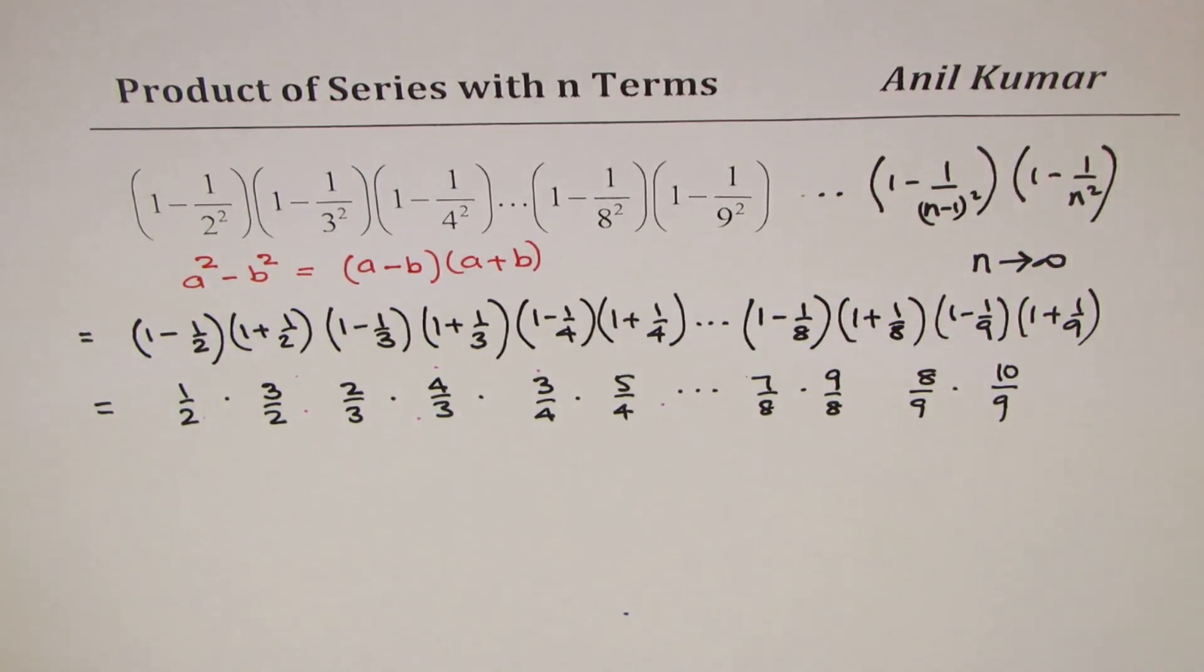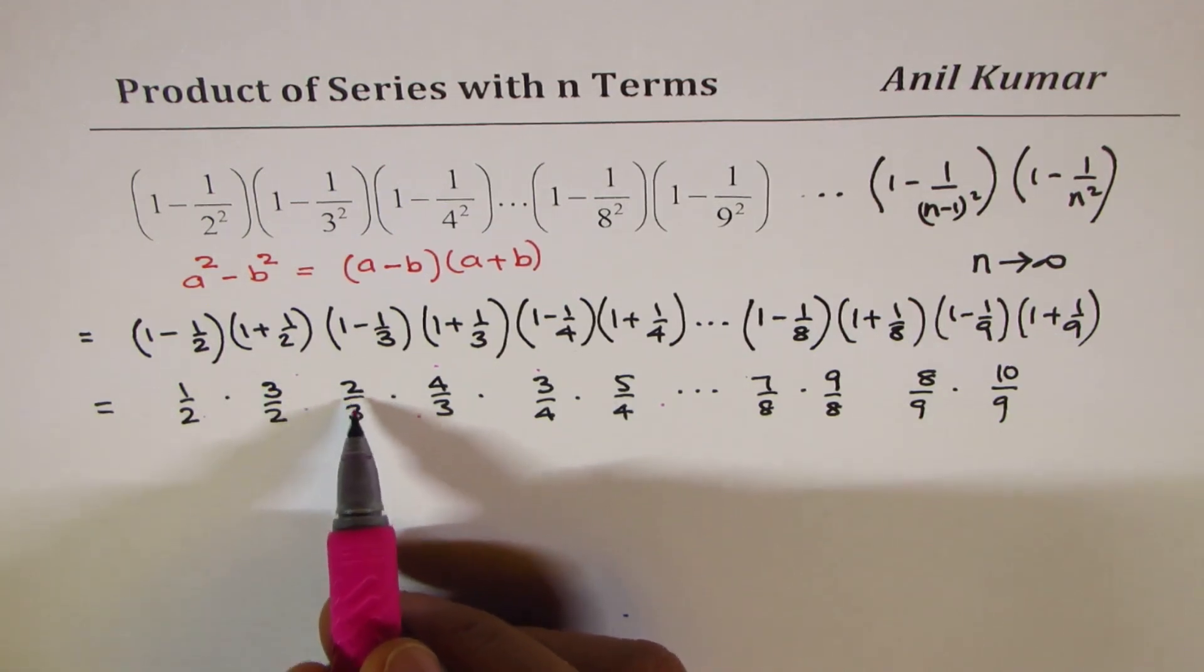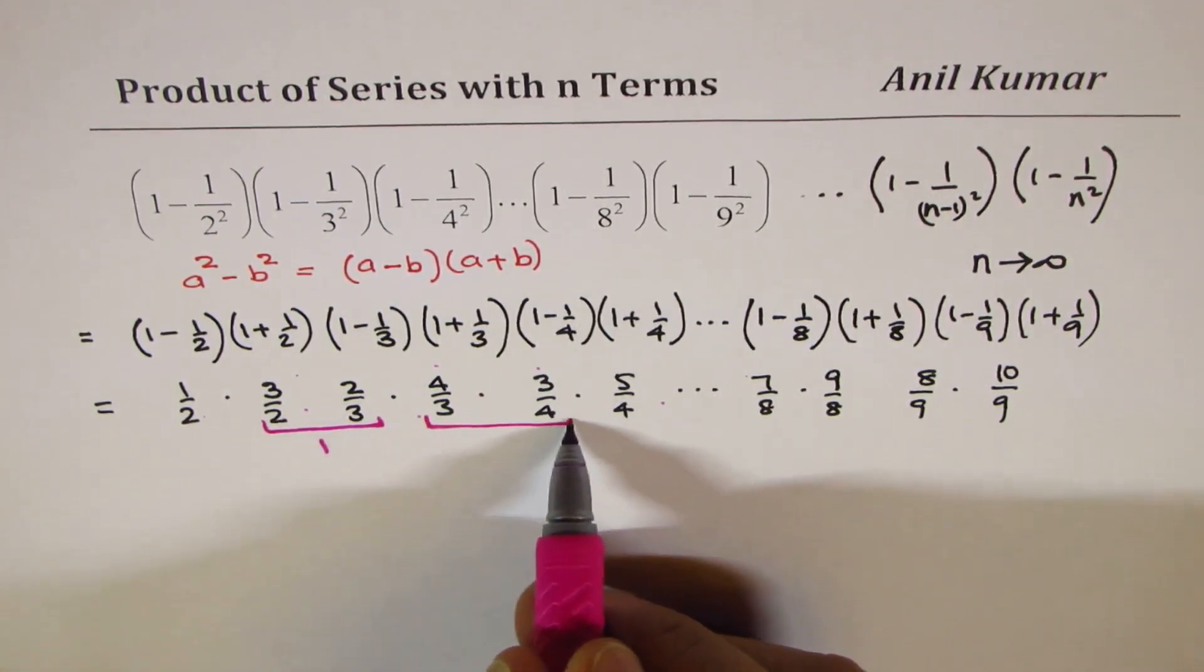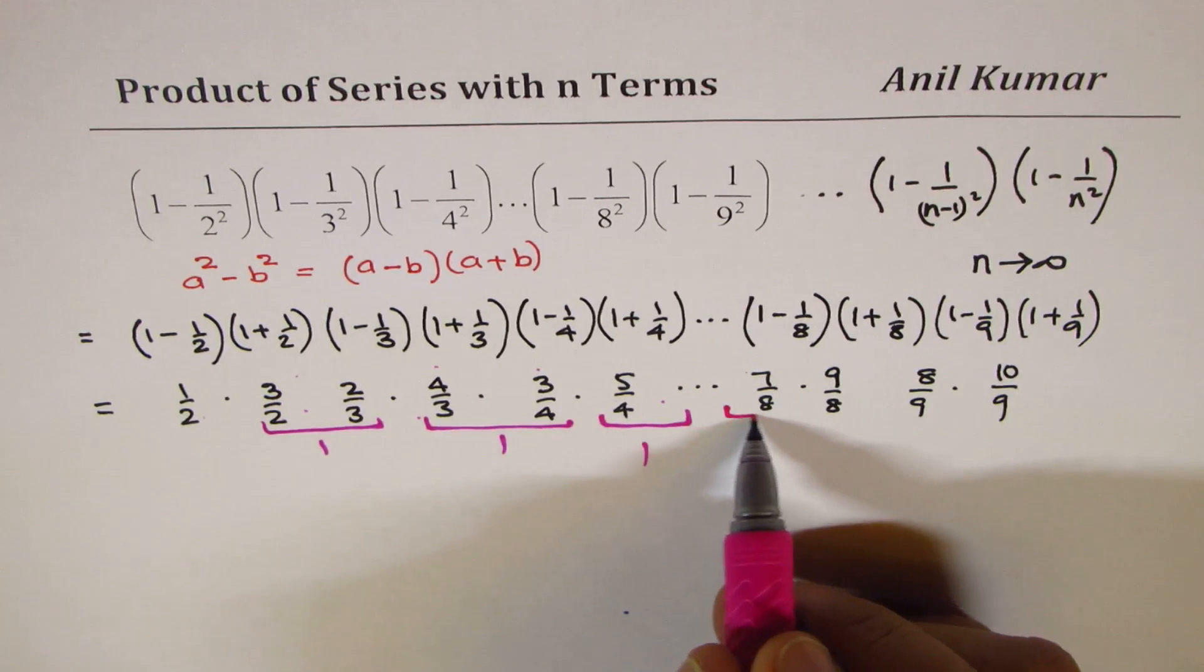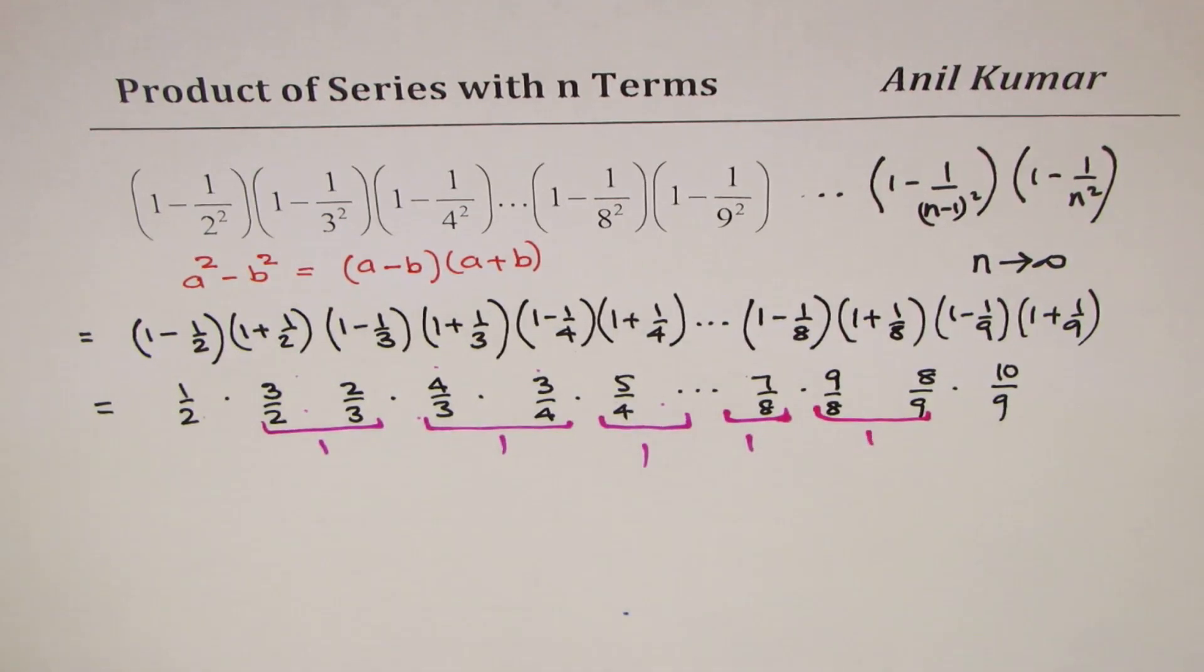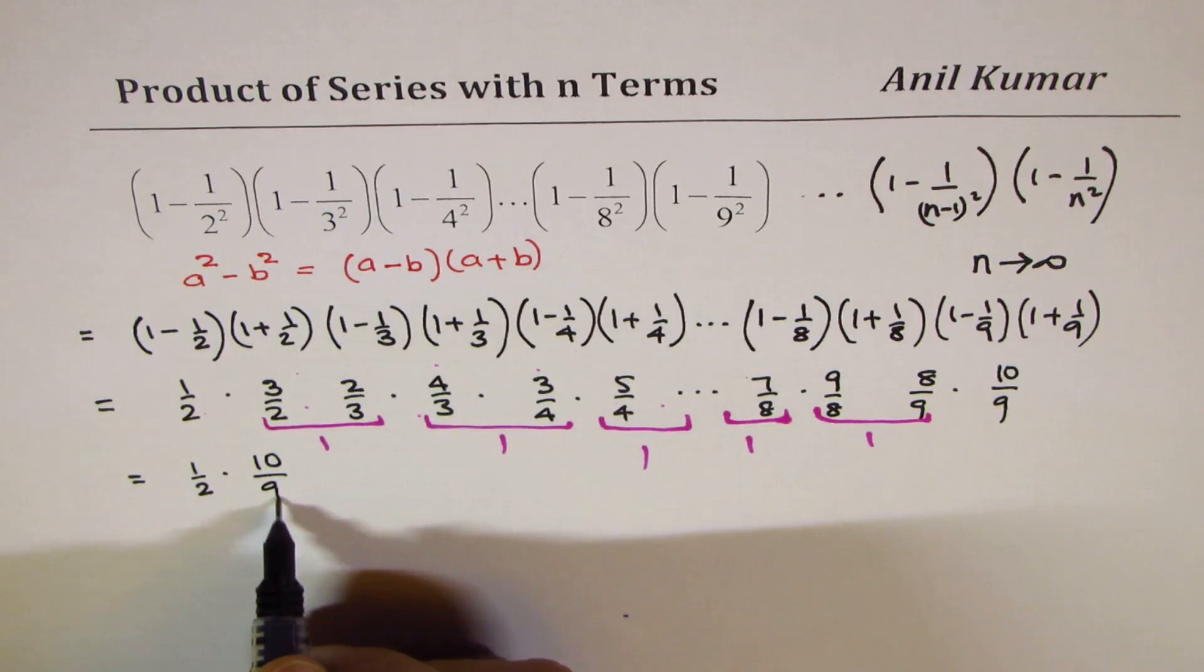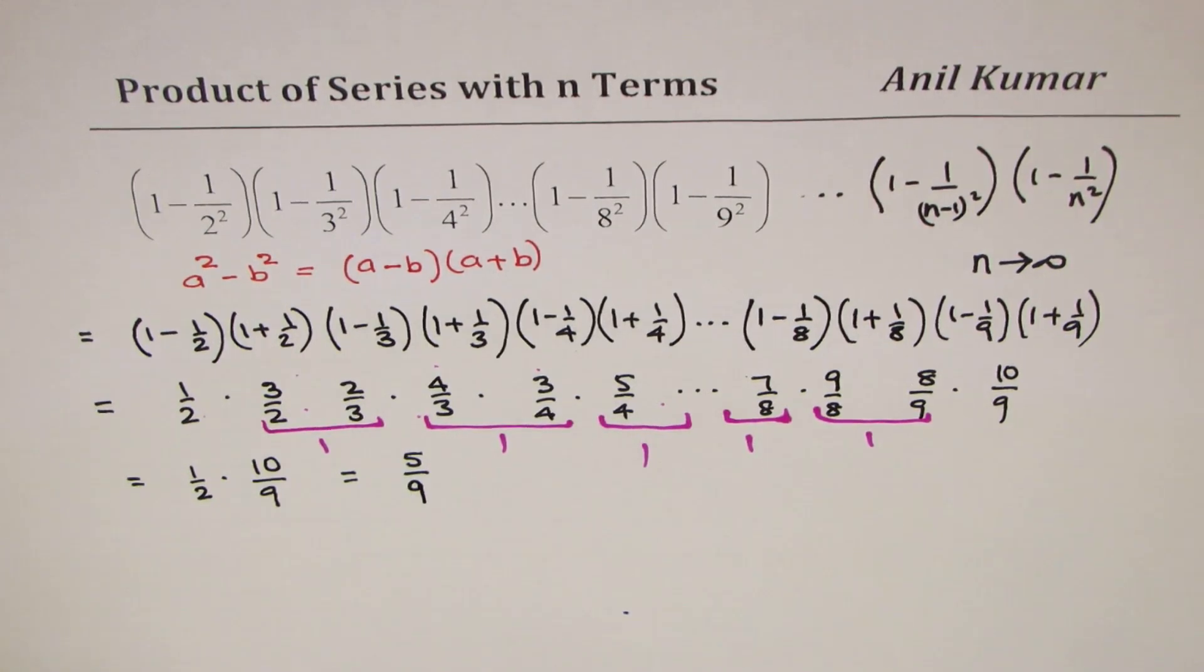So, we kind of get product of these fractions. You will see that 3 over 2 is being followed by 2 over 3. So, this number cancels and you get 1. Similarly, 4 over 3 and 3 over 4 when multiplied gives you 1. So, likewise, this will give you 1. Number before will give it 1. What are you left with? Ultimately, you will be left with the first number, which is half, times the last number, which is 10 over 9. And that is indeed equal to 5 over 9. So, that is your final result.